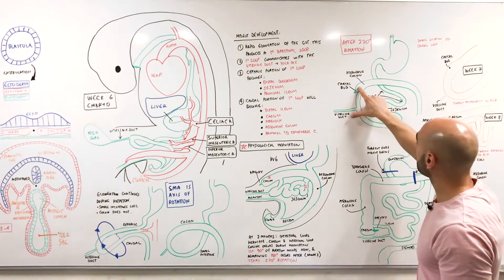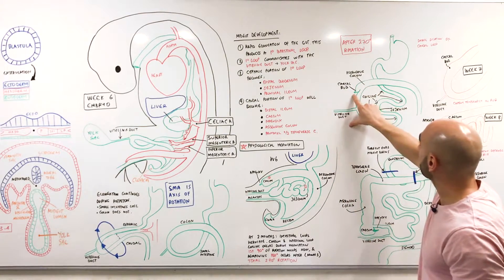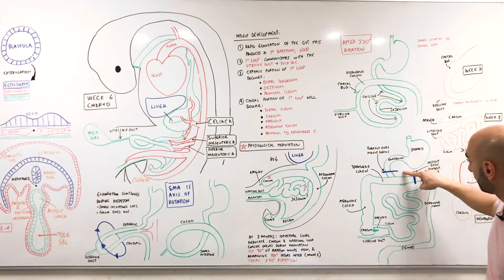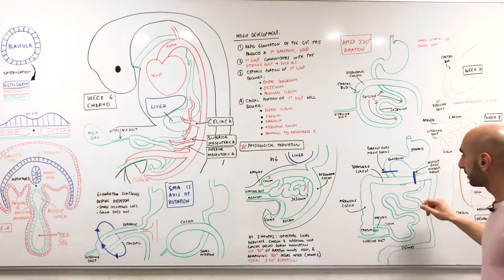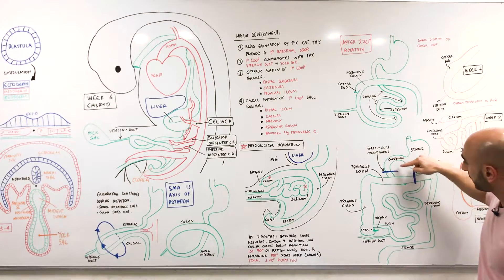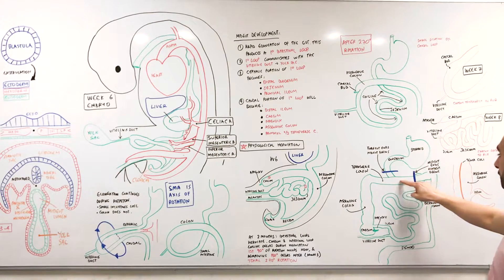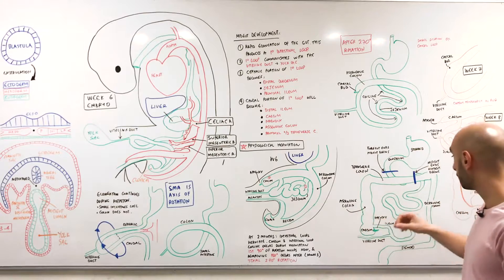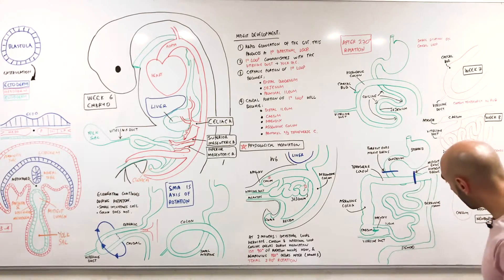We have the cecum, which is initially in the right upper quadrant, with the cecal bud developing. Looking at the developed GIT, the bile duct entry marks where the midgut begins. The proximal two-thirds of the transverse colon is where the midgut ends and the hindgut begins - so the hindgut is everything after that junction with the final one-third portion of the transverse colon.